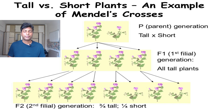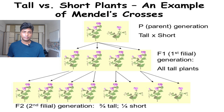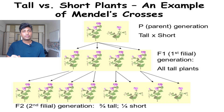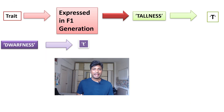In the F1 generation all the plants were tall. Mendel considered that these tall plants must also be carrying a recessive allele — a recessive factor — and that is why in the F2 generation some plants were dwarf. The character that appeared in the F1 generation was tallness, but a hidden recessive factor for dwarfness was also present.